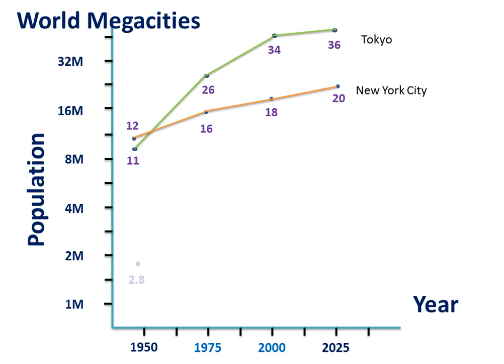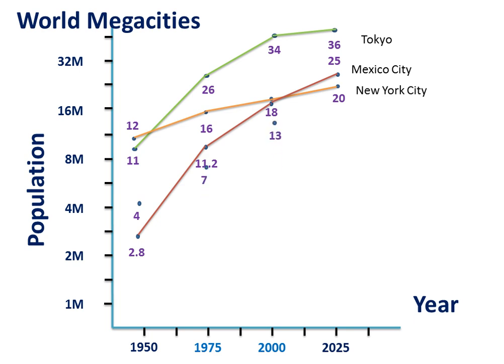The next city we'll look at is Mexico City. Mexico City started with a very small 2.8 million in 1950, and by 1975 it had expanded to a whopping 11.2 million, then 18 million, and it's projected to be at 25 million in 2025. Lastly, let's have a look at Shanghai. Shanghai started quite small — 4 million in 1950, 7 million in 1975, finally became a megacity between 1975 and 2000, and is projected to hit 20 million in 2025.